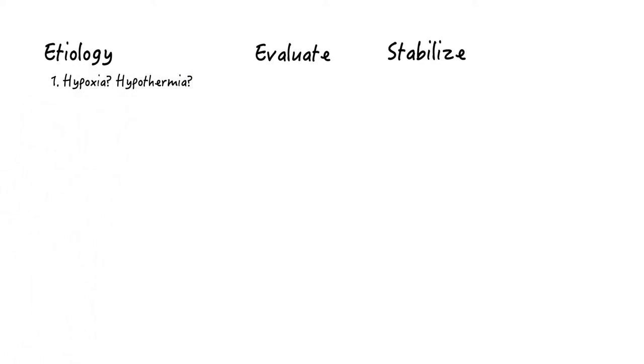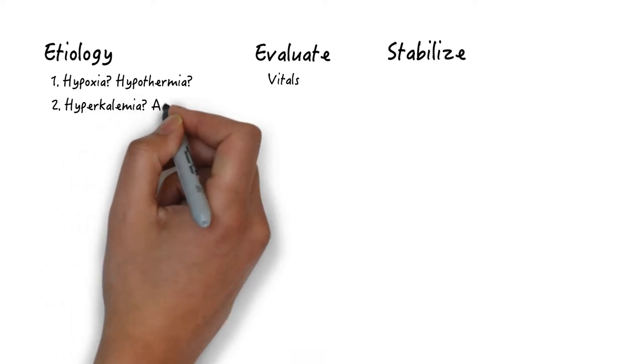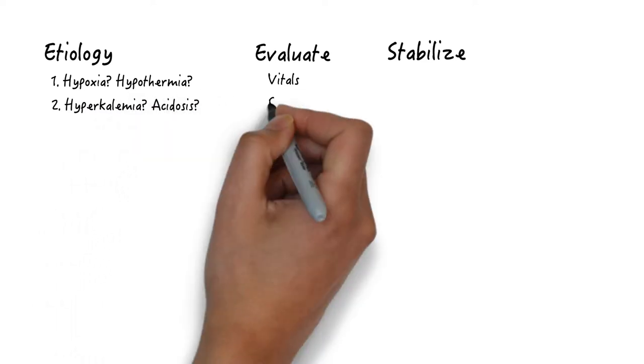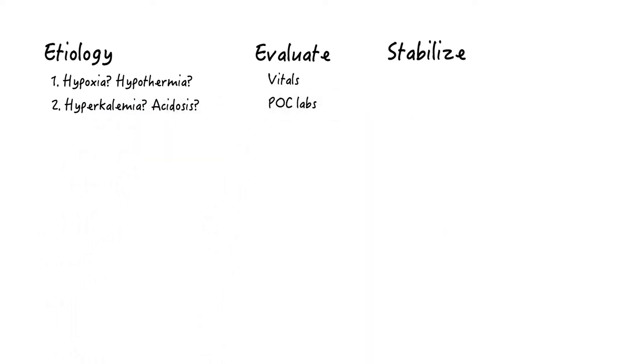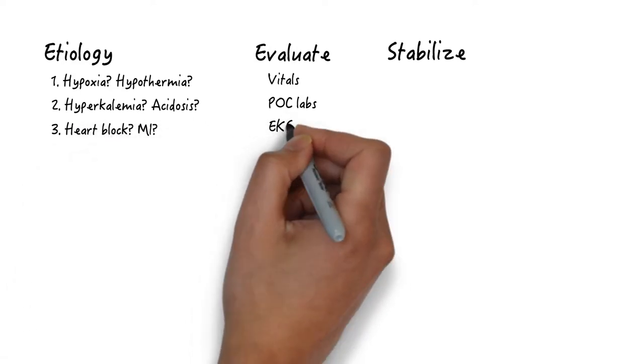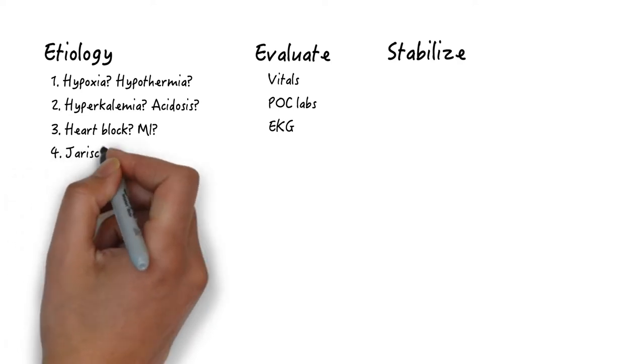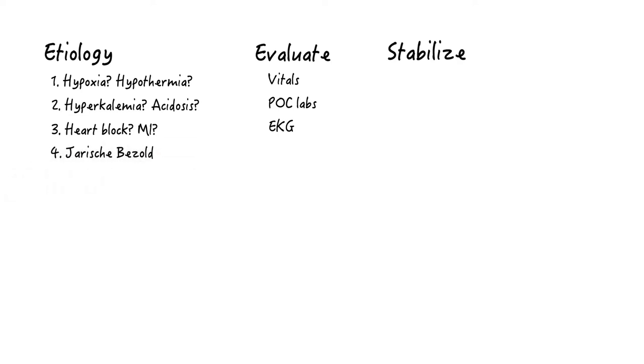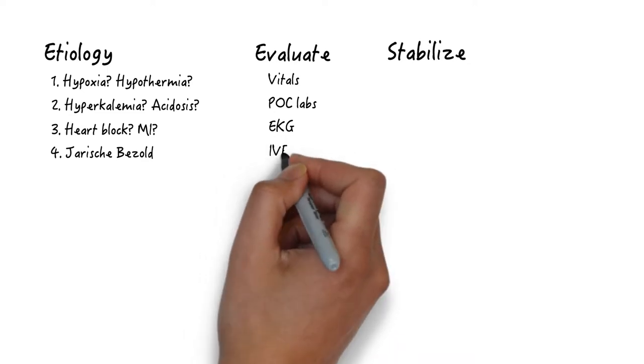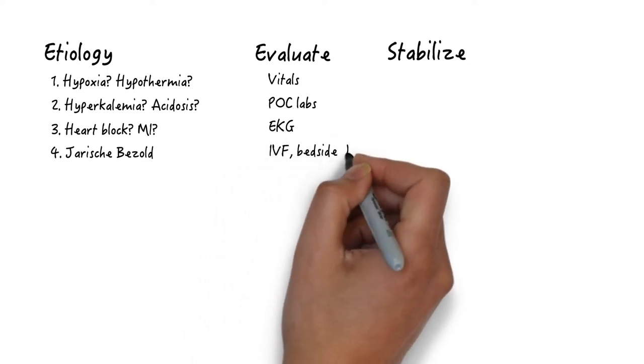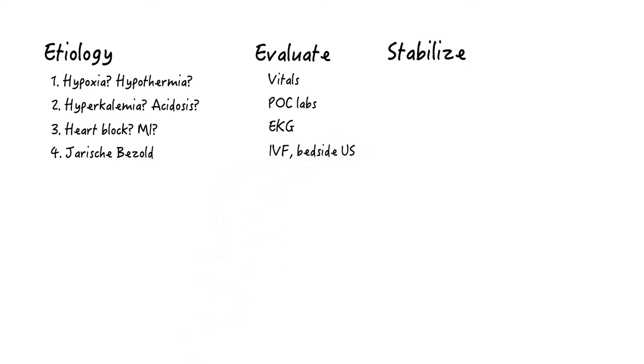Hypoxia and hypothermia, which you can rapidly detect by performing a full set of vitals. Hyperkalemia, acidosis, which is also rapidly detectable through point-of-care labs. Heart block and MI, which is usually pretty evident on EKG. There are cardiac reflexes, like the Bezold-Jarisch reflex,